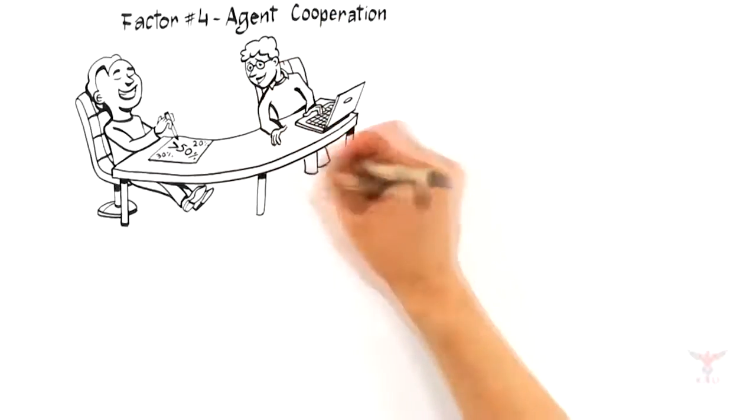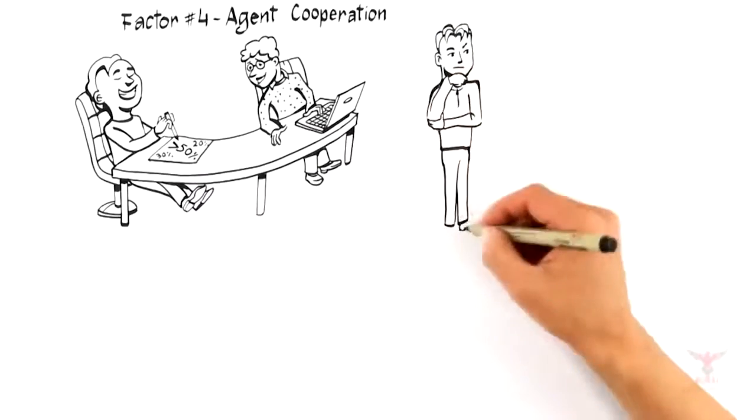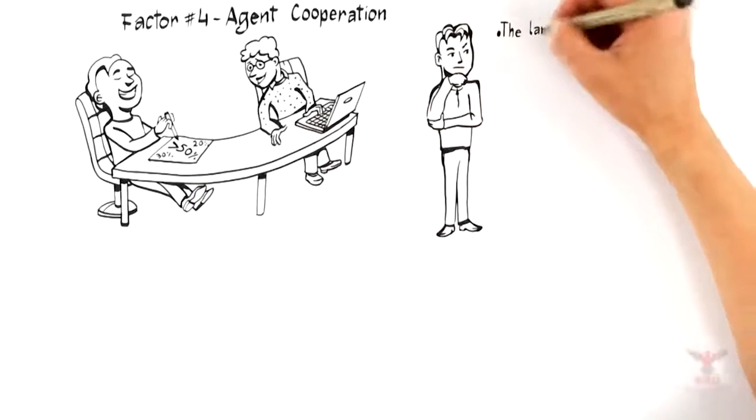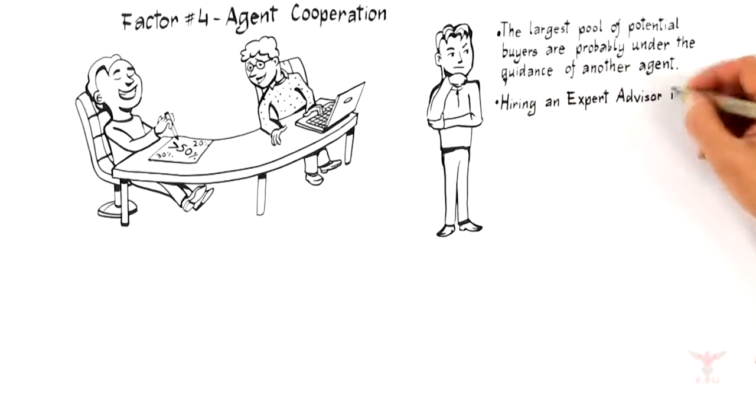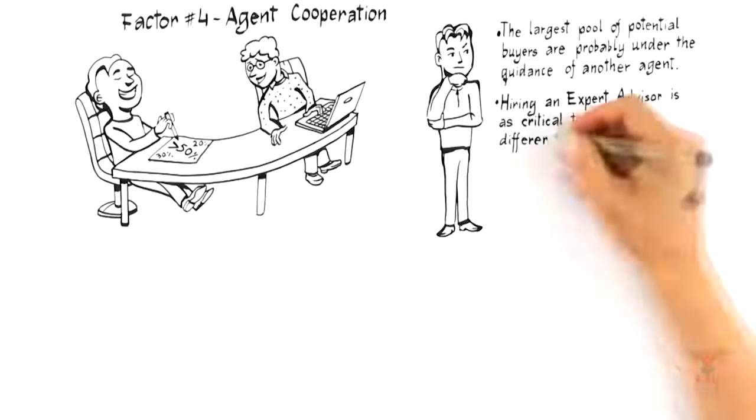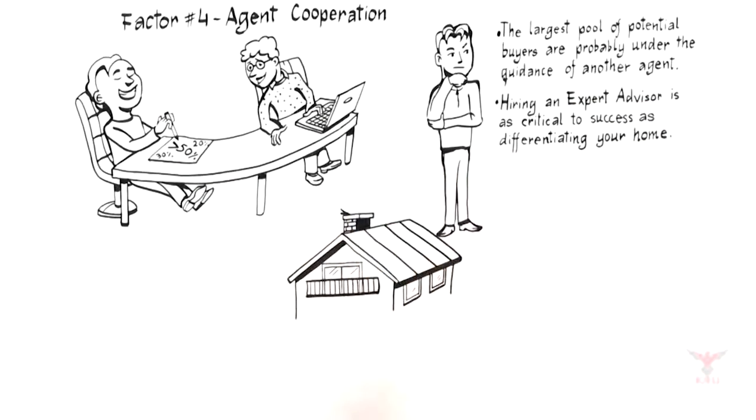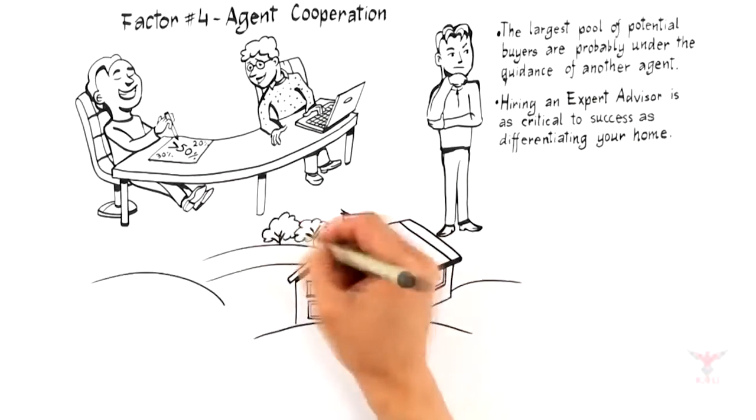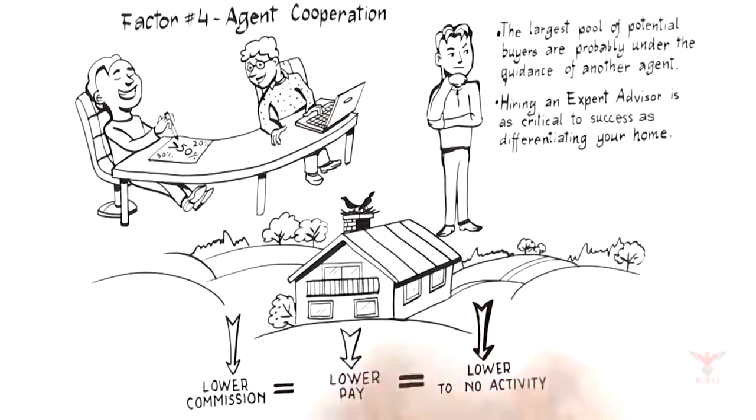Since the largest pool of potential buyers are probably under the guidance of another agent, it's critical that your expert advisor allocate a portion of their marketing budget to get your home in front of the top agents in the market who represent buyers. This means hiring an expert advisor who understands the current incentives that motivate other agents to bring their best clients is as critical to success as differentiating your home is to attract targeted buyers. Be wary of the agent that offers to accept lower commission. Often this leads to a lower compensation being offered to the agents that potentially have a buyer for your home, resulting in little to no activity on your house.